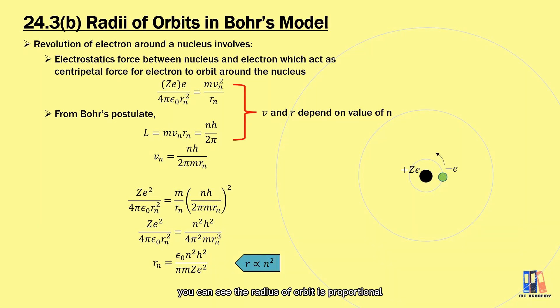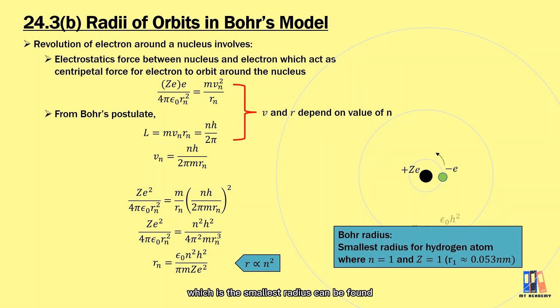There is a term called Bohr's radius which is the smallest radius that can be found, and it is the first orbit in hydrogen atom where n equals 1 and Z equals 1. It is approximately 0.053 nanometers and often used as the fundamental length to compare with other orbits of hydrogen atom or other atoms as well.